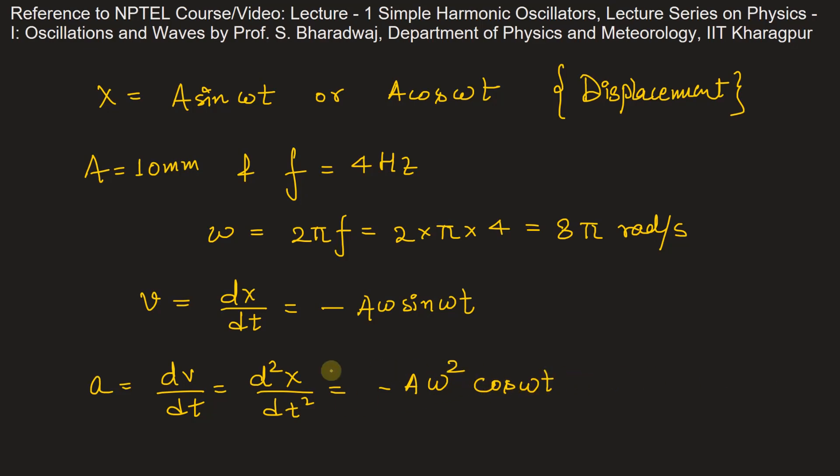According to the problem, we need to maximize the acceleration. Maximum acceleration will occur when this value is maximum. Amplitude is a fixed value, omega is also a fixed value. The only thing we can vary is cos omega t, and cos omega t is maximum when this is equal to 1.